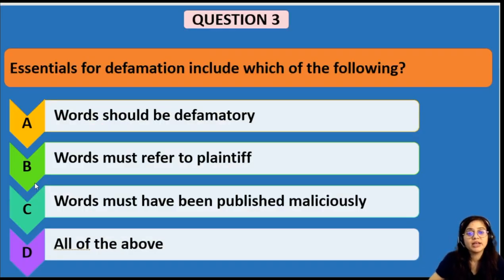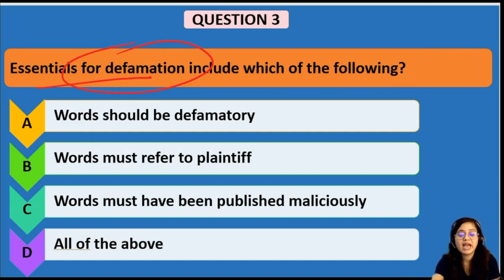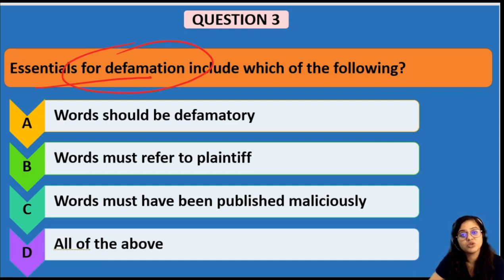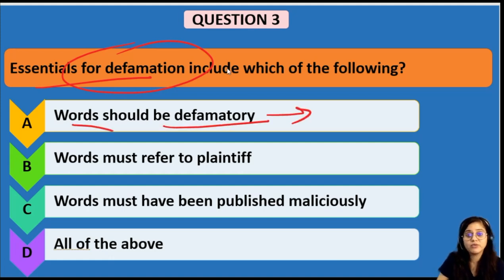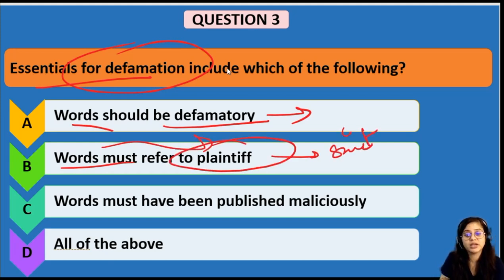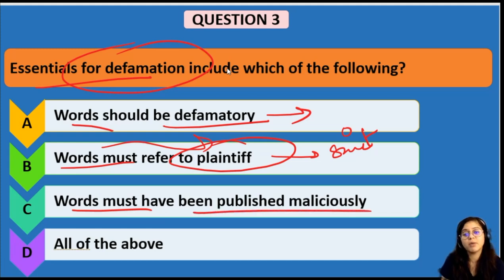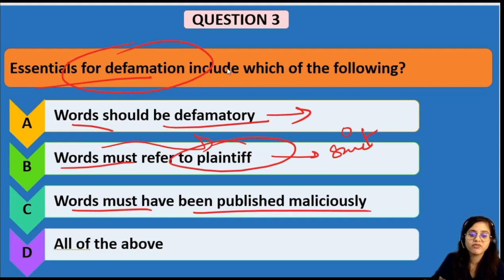Next question: What are the essentials of defamation? Defamation is an imputation on the reputation of another person that lowers the standing of that person in the eyes of others. The essentials are: first, the words should be defamatory; second, the words should refer to the plaintiff — they must refer to the person bringing the suit and not anyone else; and third, the words must have been published maliciously. Therefore, the answer is option D — all of the above.